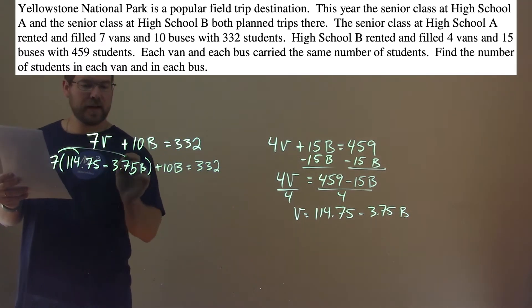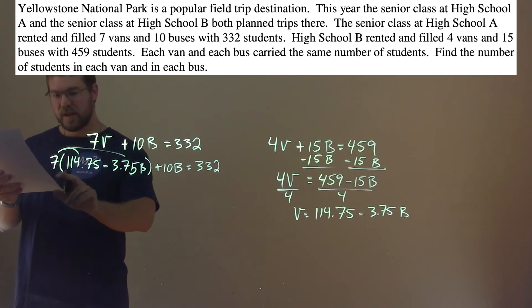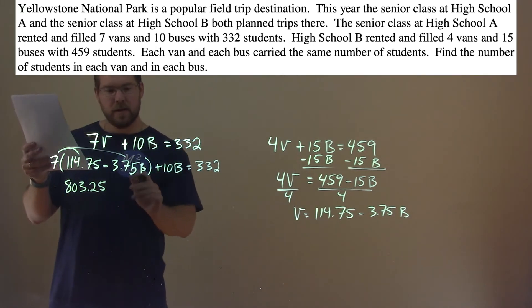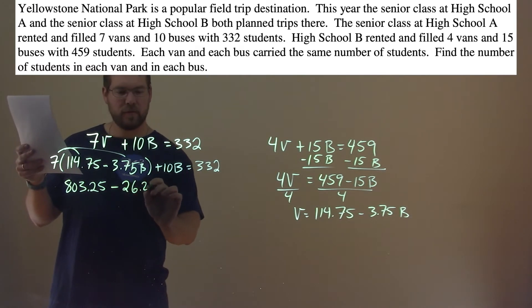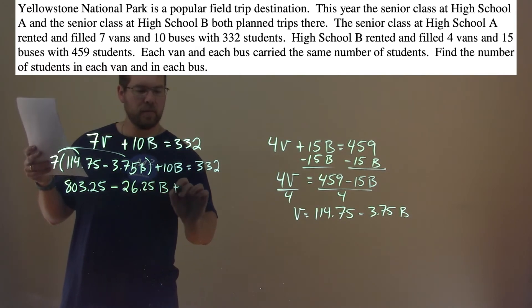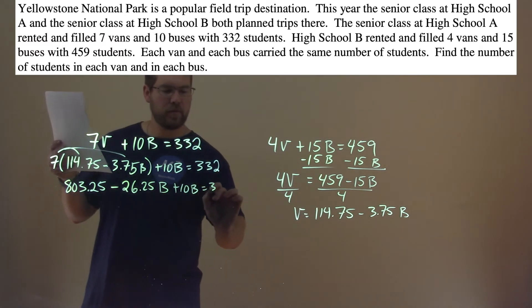First, we need to distribute. Again, same process as always. 7 times 114.75 is 803.25. 7 times negative 3.75, we have a minus 26.25b, and that's b plus 10b equals 332.